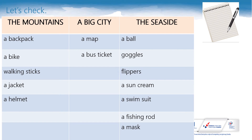So now let's check. What have you got in your tables? The mountains: a backpack, a bike, walking sticks, a jacket, a helmet. A big city: a map, a bus ticket. The seaside: a ball, goggles, flippers, a sun cream, a swimsuit, a fishing rod, a mask.